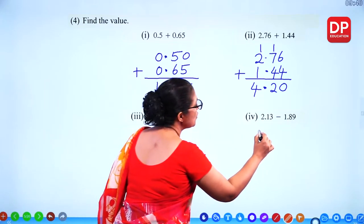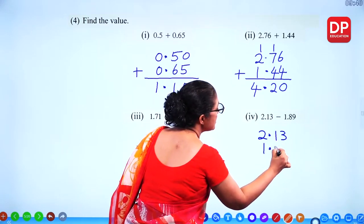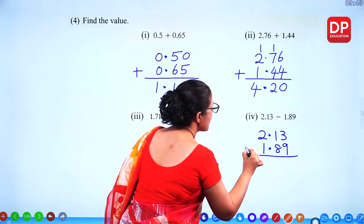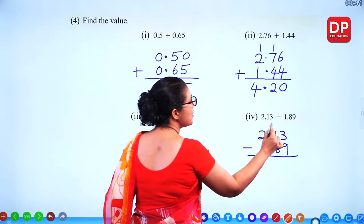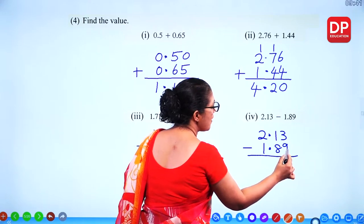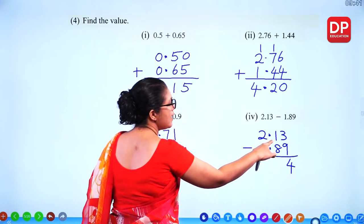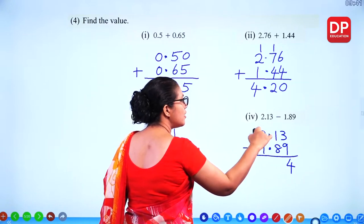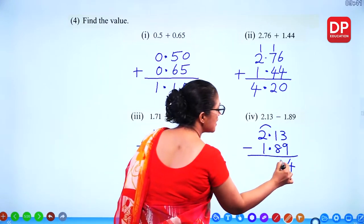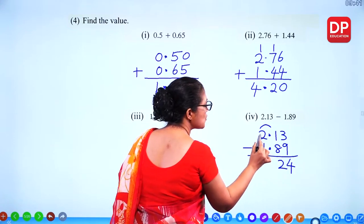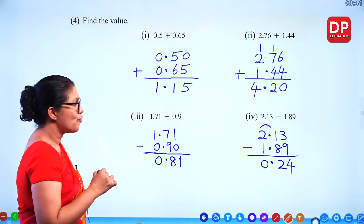For 2.13 minus 1.89: we can't subtract 9 from 3, so borrow to get 13 minus 9 = 4. The next digit becomes 0, so borrow again: 10 minus 8 = 2. Then 1 minus 1 = 0. The answer is 0.24.